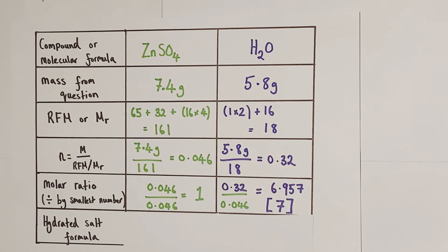So effectively what we're saying here is that for every one mole of zinc sulfate in this hydrated salt we expect to find seven moles of water comparatively.